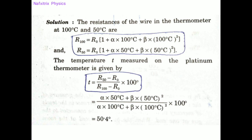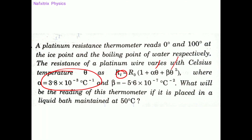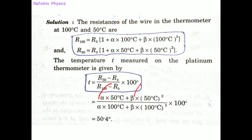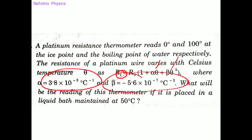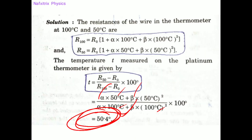Using the provided values of alpha and beta, with temperature 50 for the 50-degree bath and 100 for the steam point, the calculation gives 50.4 degrees centigrade. The thermometer does not show exactly 50°C but instead 50.4°C, because this is not an absolute scale — we are measuring temperature based on a specific property of platinum, namely its resistive behavior. So the answer is 50.4 degrees centigrade.